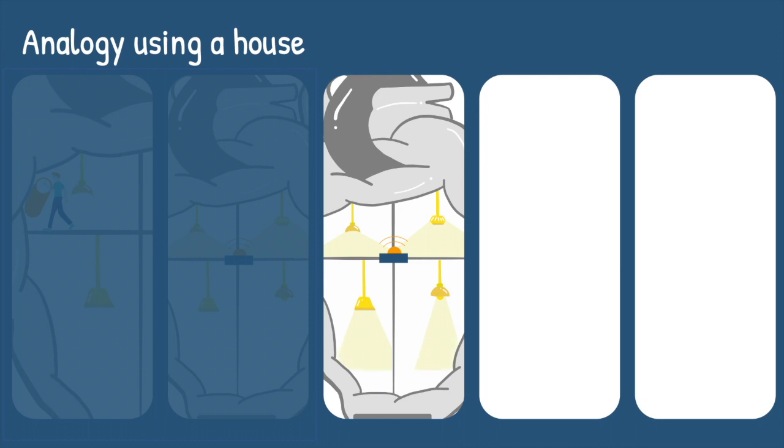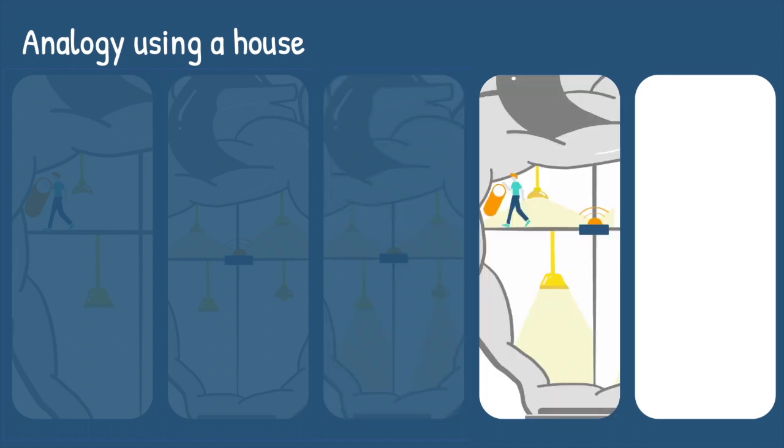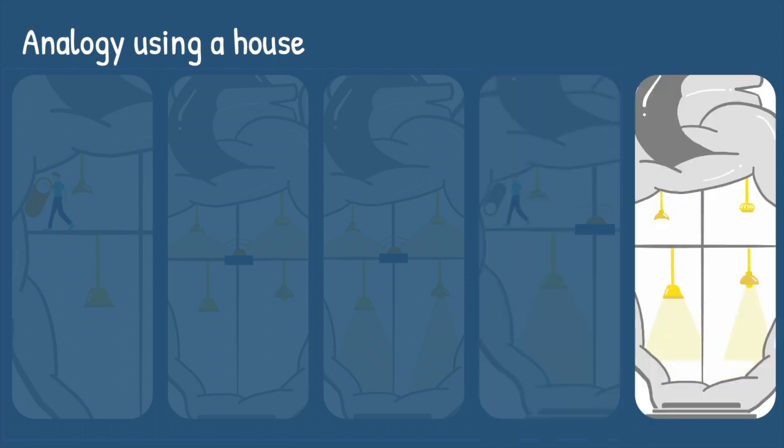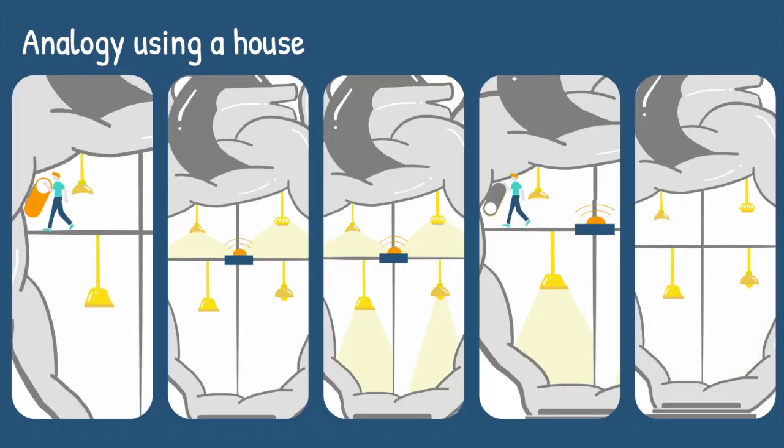When Alfred notices the lights on the ground floor are on, he will switch off the lights on the top floor. As the light sensor loses the signal from the lights on the top floor, it will switch off the lights on the bottom floor. This again triggers Alfred to switch on the lights again, and the cycle repeats. Each cycle of the top floor and bottom floor lighting up will represent a heartbeat.